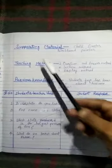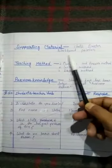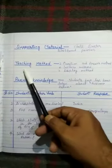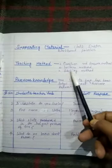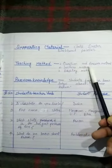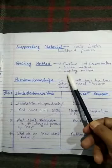Next headline will be right here, supporting material. Chart, duster, blackboard, pointer. And next, teaching method. There are three points written here. First, question and answer method. Second, lecture method. And third, display method.